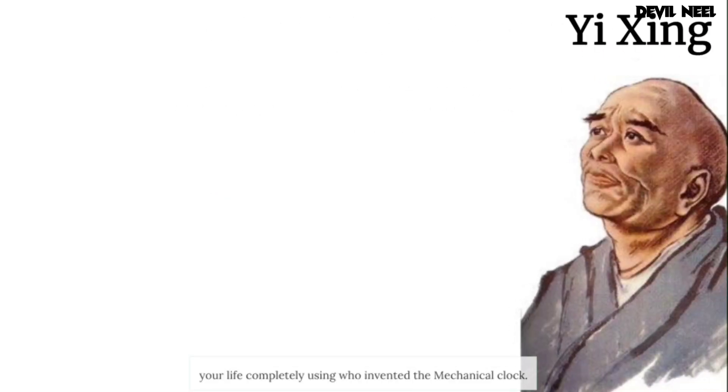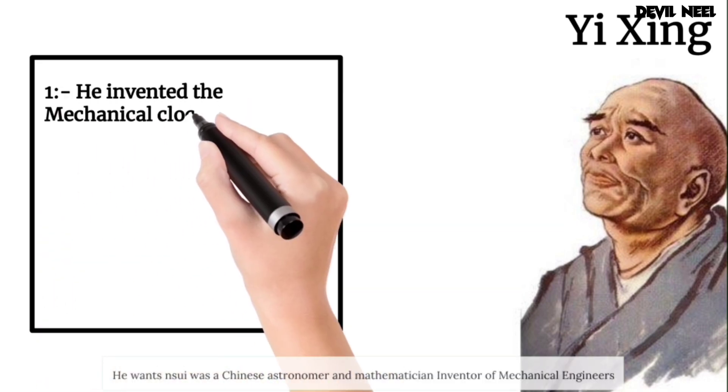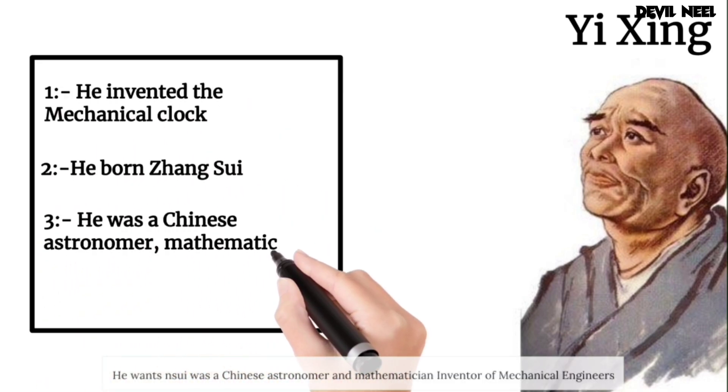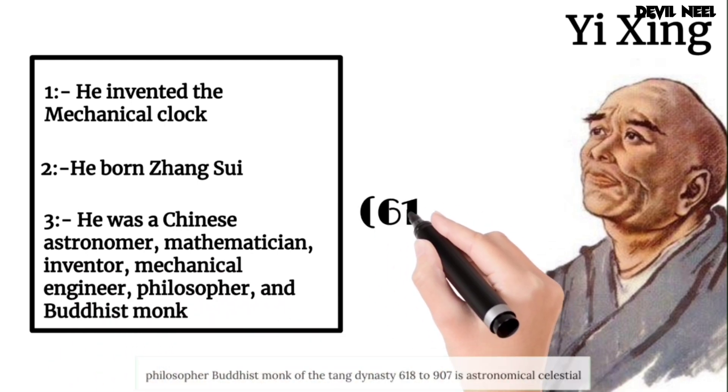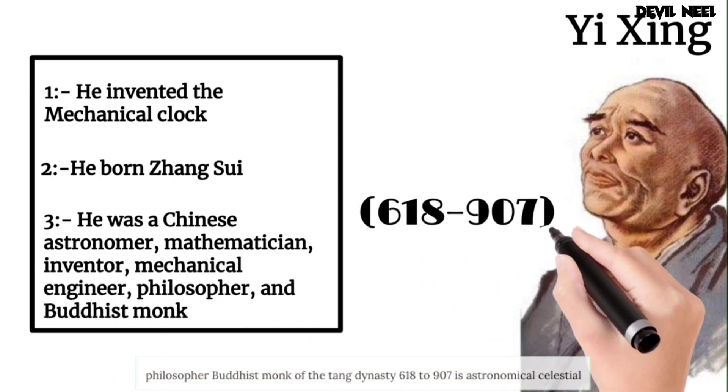Yuzing, who invented the mechanical clock. He, born Jiang Sui, was a Chinese astronomer, mathematician, inventor, mechanical engineer, philosopher, and Buddhist monk of the Tang Dynasty, 618-907.